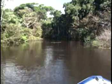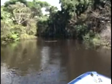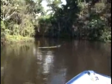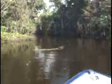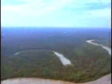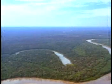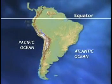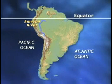Tropical climates are hot and wet. The Amazon rainforest, the world's largest rainforest, is in a tropical climate. This huge rainforest spans the equator, running through much of the northern third of South America.